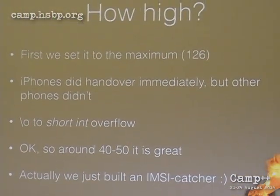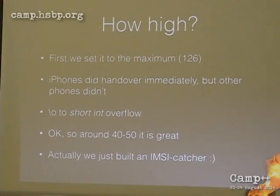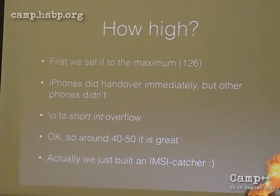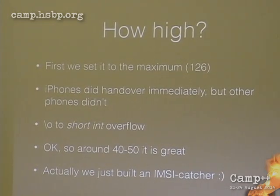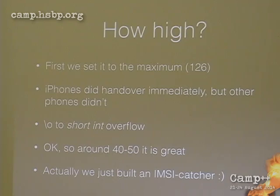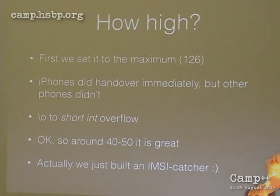I did experiments setting the C2 value to the maximum of 126. My iPhone handed over immediately, but an older BlackBerry I use for network testing did not — it showed a C2 value of around minus 100 or minus 126. BlackBerry uses a short integer to store this value, so I created a short integer overflow in its software; it thought my tower was the worst. The iPhone uses a 32-bit integer and handled it correctly. I reduced the value to around 40-50, which works well. As a side effect, we essentially built an IMSI catcher.